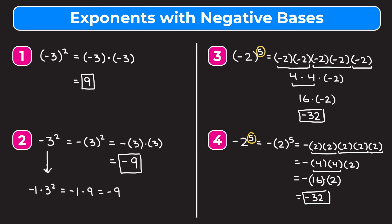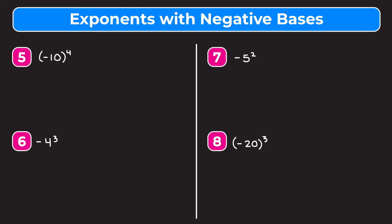However, going back to examples 1 and 2: if you have an even exponent and the negative is inside the parentheses, your answer is going to be positive. If the negative is outside the parentheses, your answer is going to be negative. Let's go through four more examples to make sure we've got this down — I encourage you to try them on your own first.